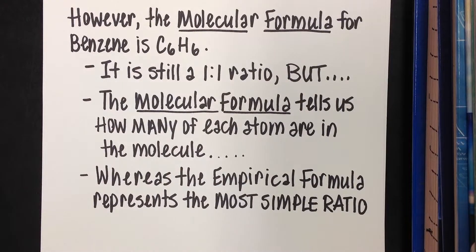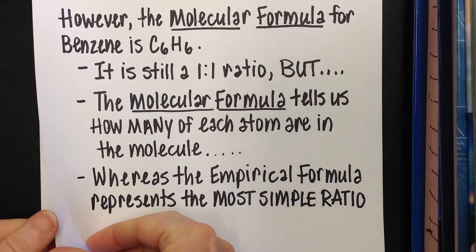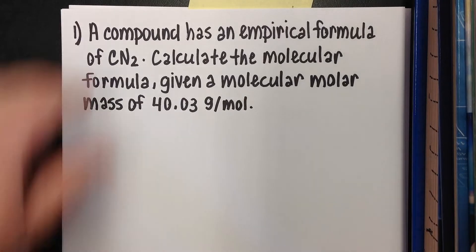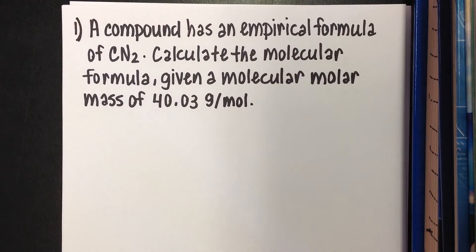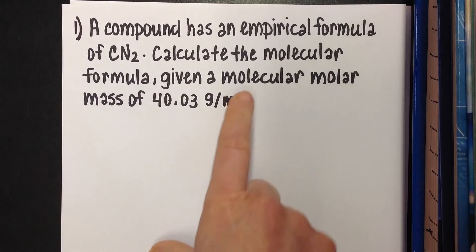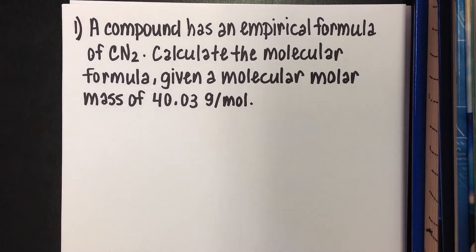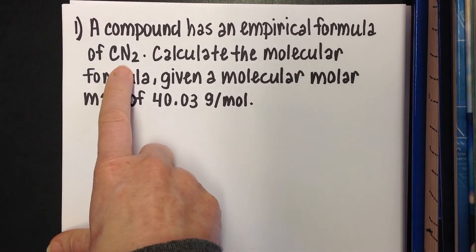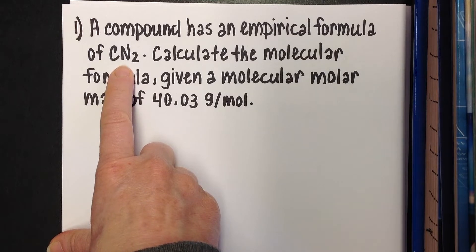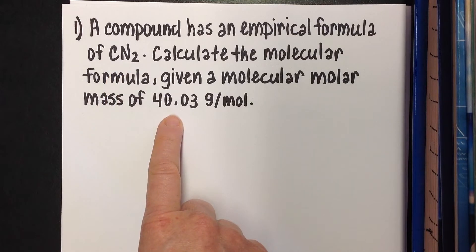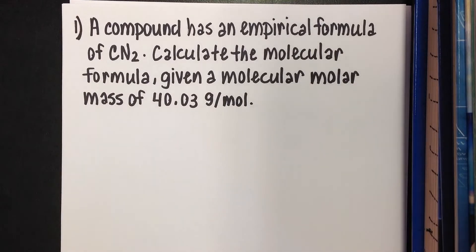The molecular formula is what we're learning to solve for today. A compound has an empirical formula of CN2. Calculate the molecular formula when given a molecular molar mass of 40.03. What makes these problems different from the last lesson is that the empirical formula is given to you — you don't have to find it. Here it is, and here is the mass of the sample.